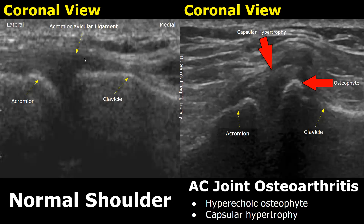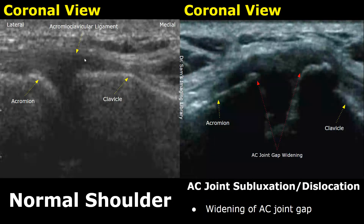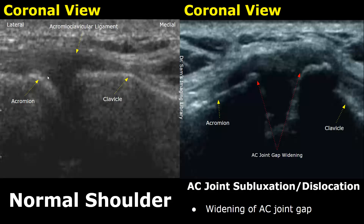Here is a case of AC joint subluxation or dislocation. The usual feature in these cases is widening of the AC joint space, and we can see it is much wider than in the normal case.